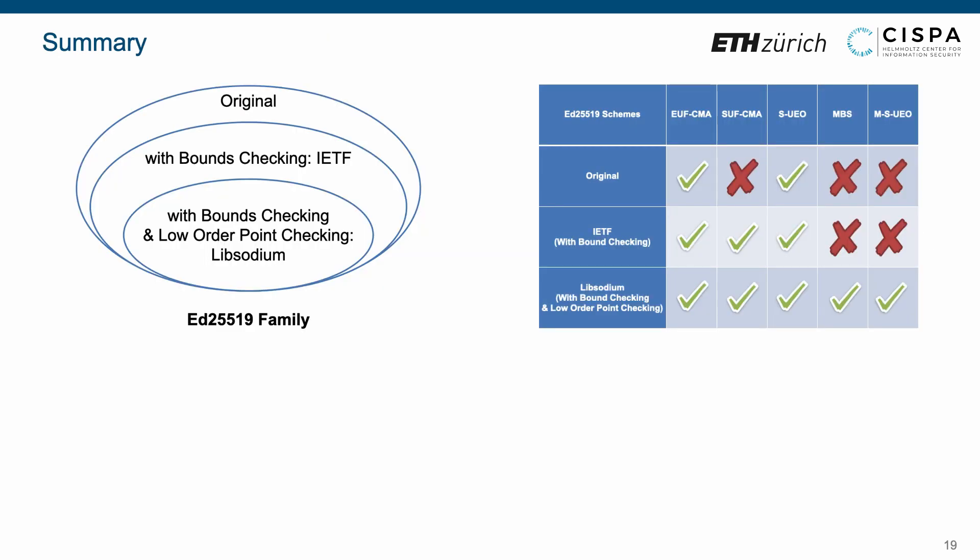In the end, we would like to provide a summary for this talk. We compare the implementations of these three representative variants of ED25519. Besides, we disclose the different security guarantees achieved by these three variants, including unforgeability and resilience to key substitution attacks.